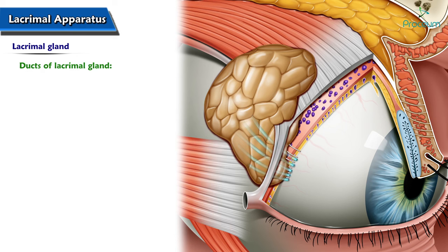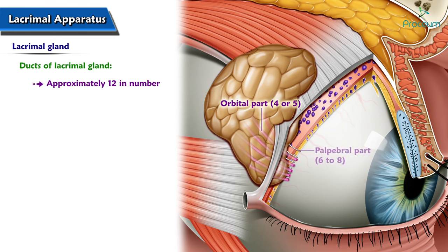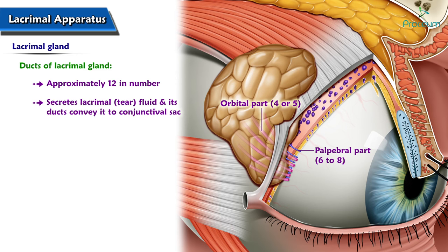The ducts of the lacrimal gland are approximately twelve in number — about four or five from the orbital part and six to eight from the palpebral part. They open into the lateral parts of the superior fornix of the conjunctival sac. The lacrimal gland secretes lacrimal tear fluid, and its ducts convey it to the conjunctival sac.